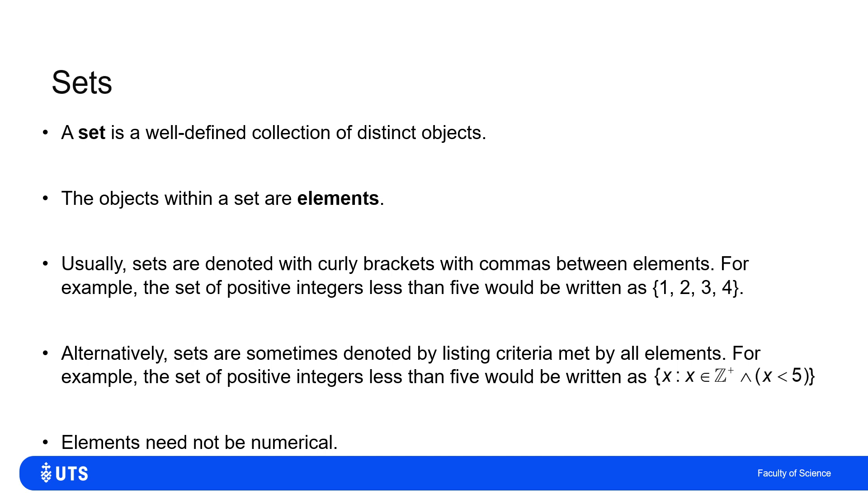Now, these examples are numerical, but sets, when I defined it at the start, I just said a collection of distinct elements. They can be numbers, they can be words, they can be, in theory, pictures. They can be anything.